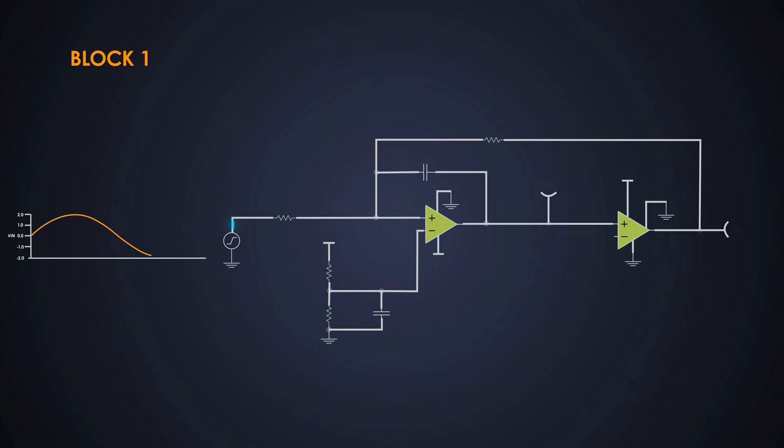The purpose of this error amplifier is to process the analog input voltage. It takes our input signal, which ranges from minus 2 volts to plus 2 volts and conditions it so that it fits within the comparison range of the triangular waveform.